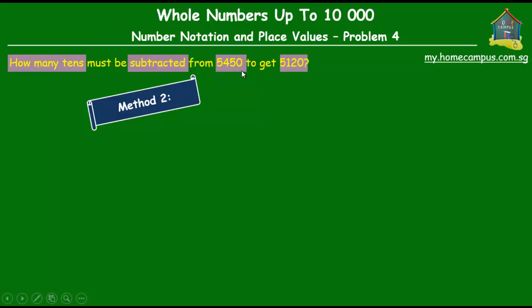The result that you get from that, you change to tens. Okay, so here's how you do it. 5450 minus 5120. Let's do the working here to the right of the screen. 0 minus 0 is 0. 5 minus 2 is 3. 4 minus 1 is 3. So, 5450 minus 5120 is equal to 313.